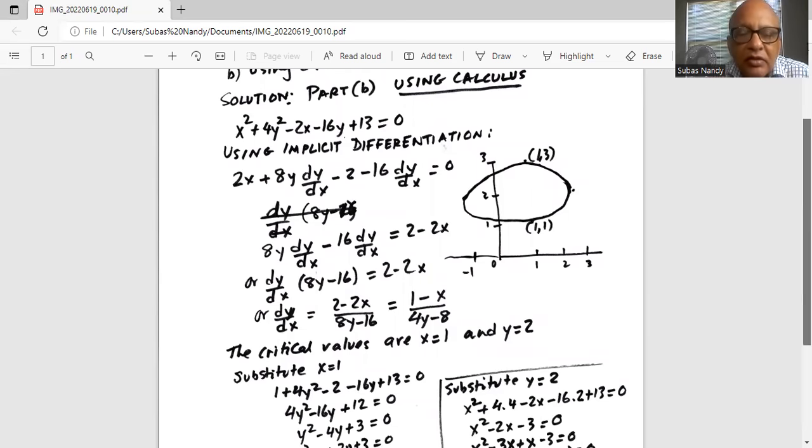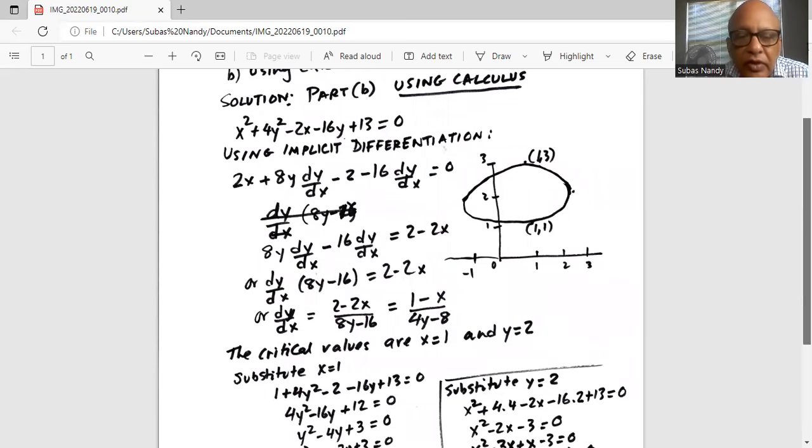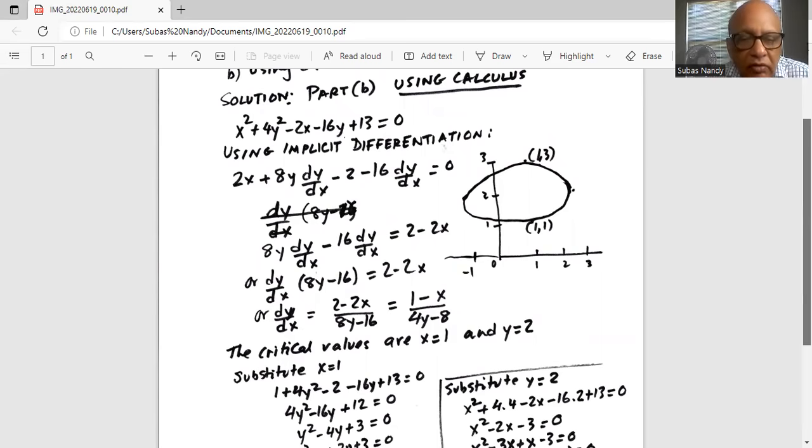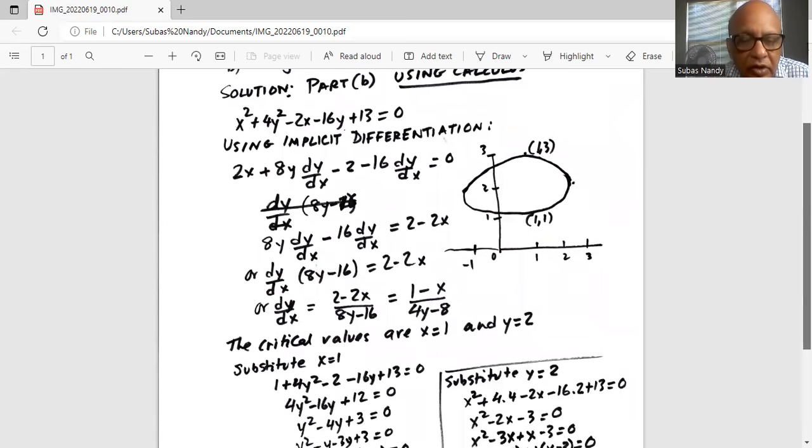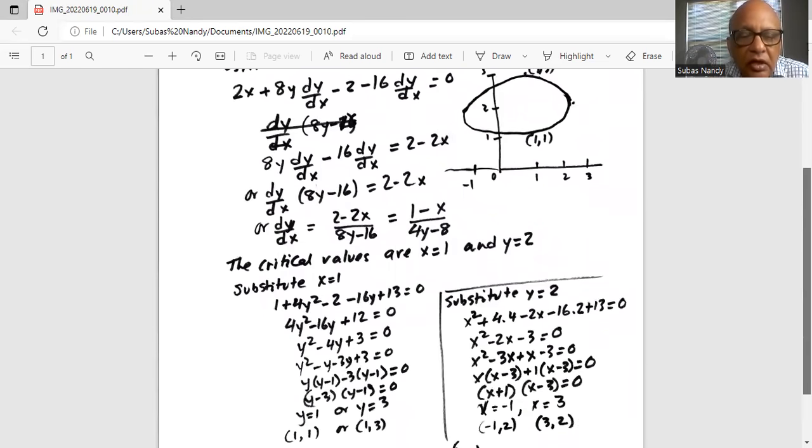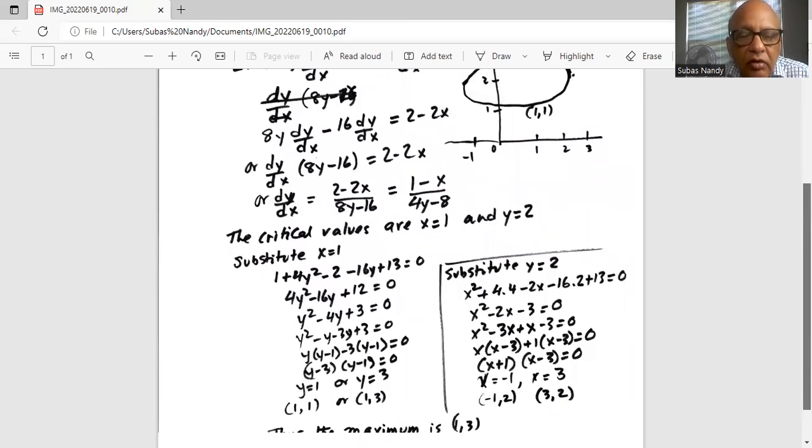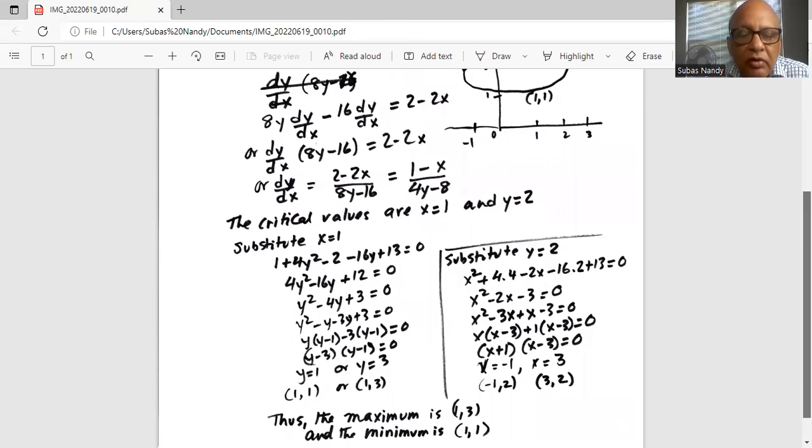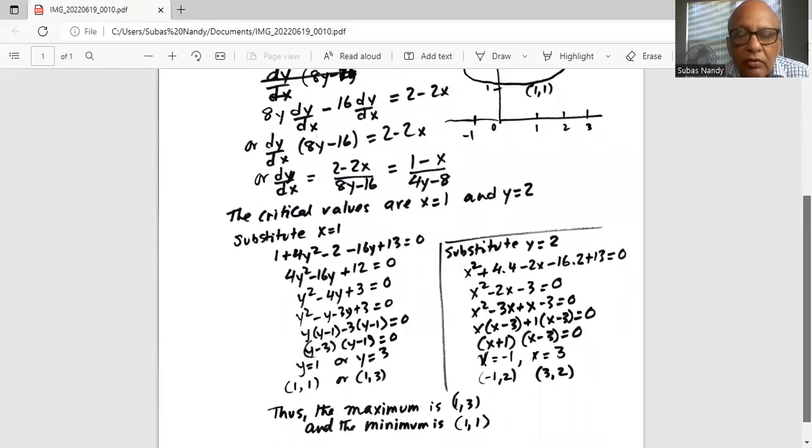So the critical values for dy/dx are x = 1 when the derivative is 0, and y = 2 when the derivative is not defined because the denominator becomes 0. We substitute x = 1 in the equation and we get an equation for y, which is y² - 4y + 3. We solve it. The two factors are (y - 3)(y - 1) = 0. So the two possible values of y are 1 and 3.